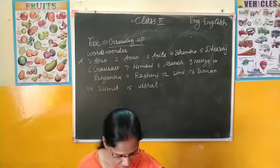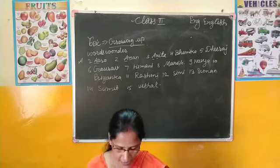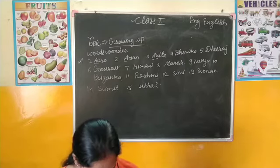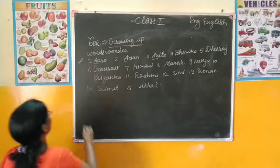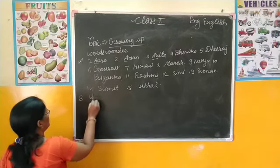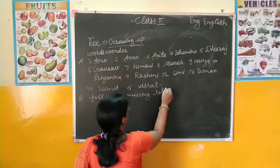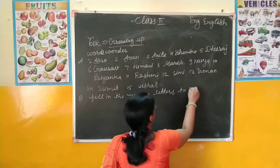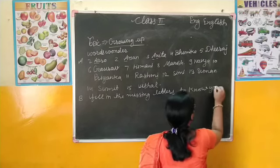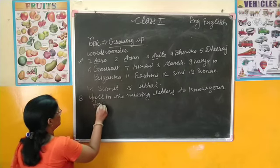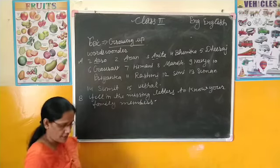ओके, यह है हमारा alphabetical rearrange order। Alphabet में हमने इन सभी को लिखा है। Next है Spelling - अगली exercise देखेंगे। आप spelling जो नीचे दी गई हैं, इसमें fill in the missing letters to know your family members।